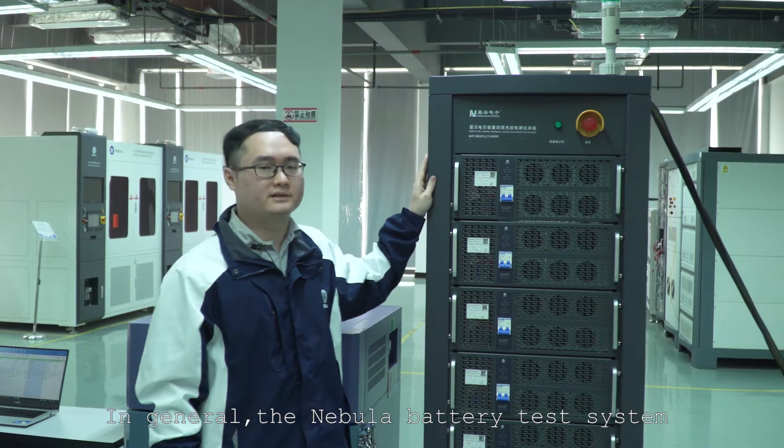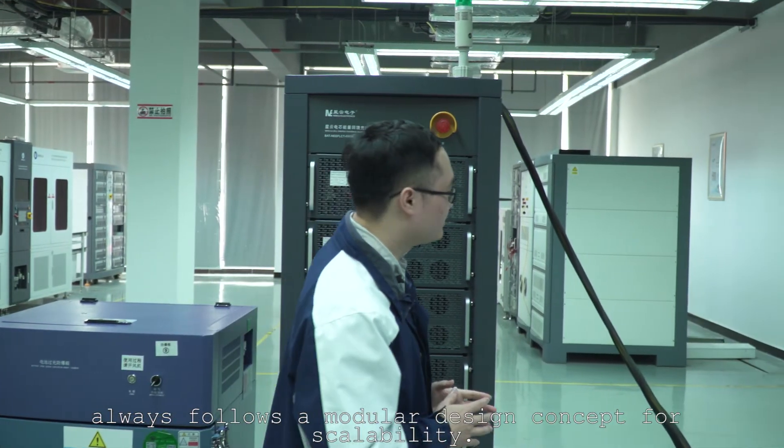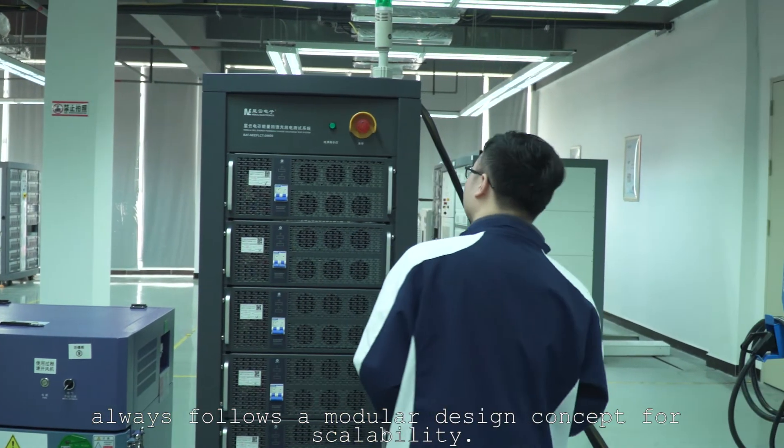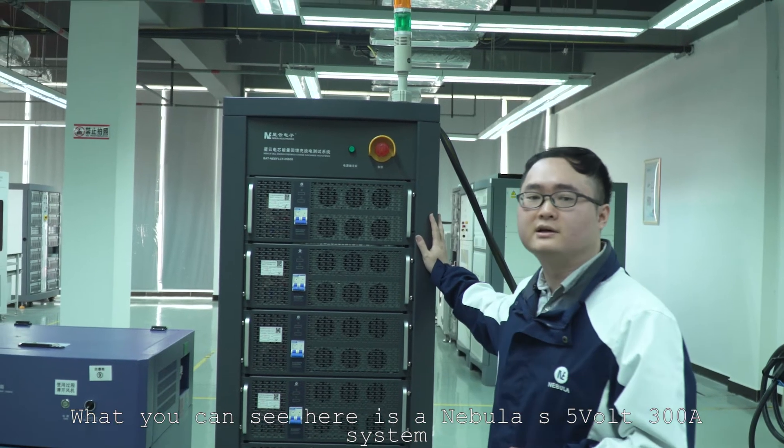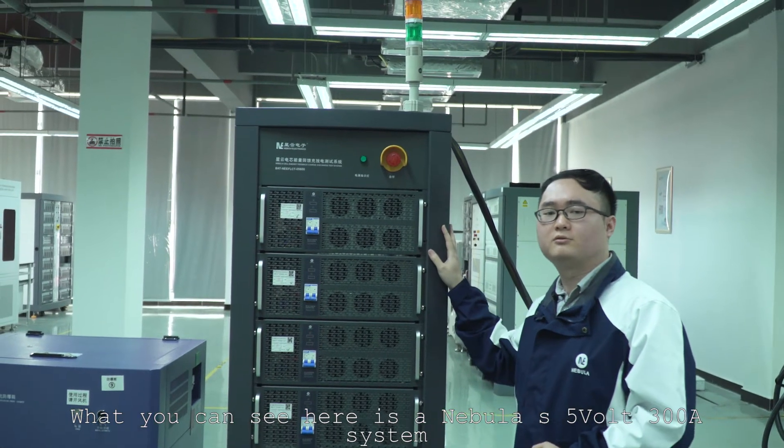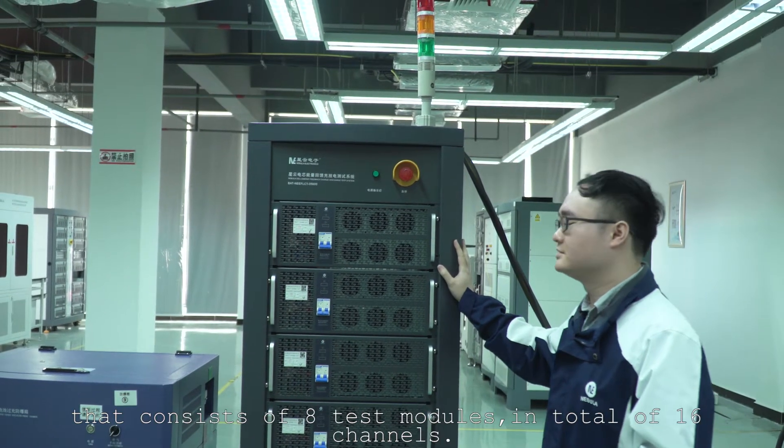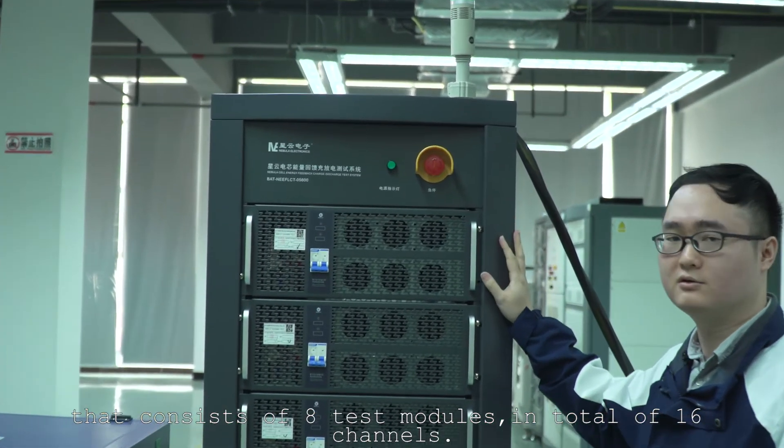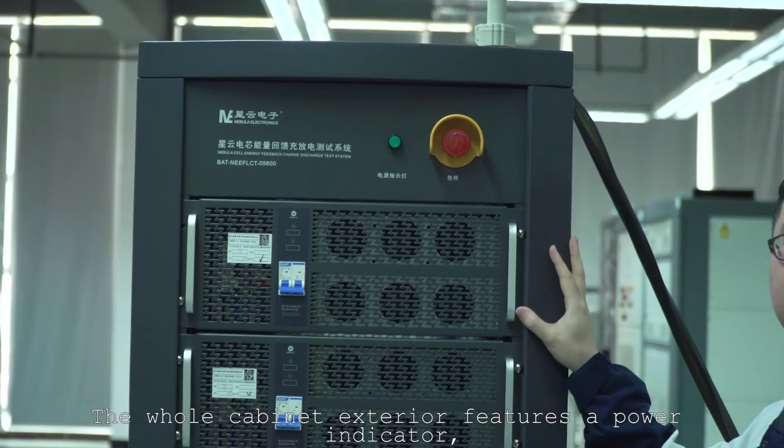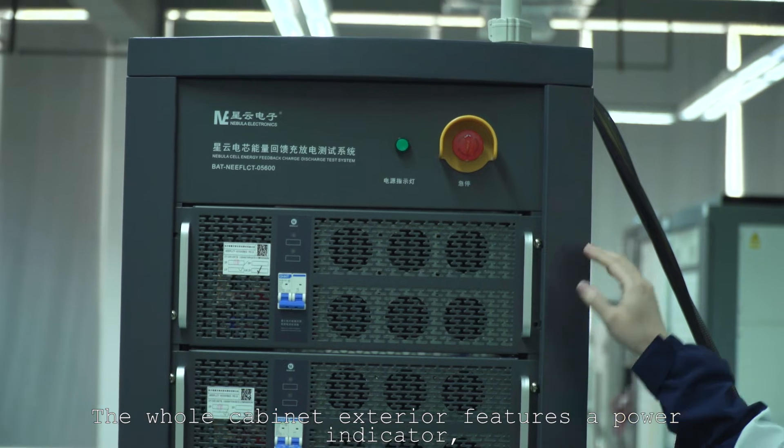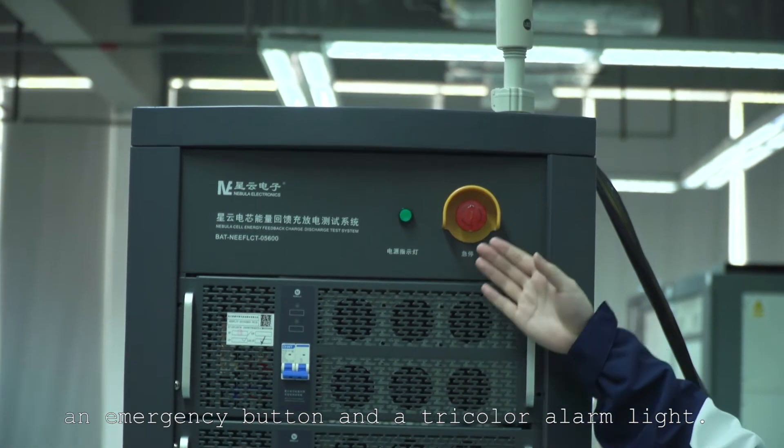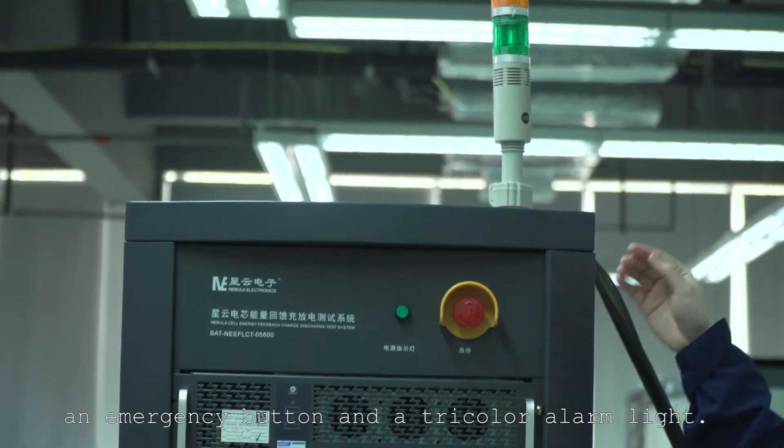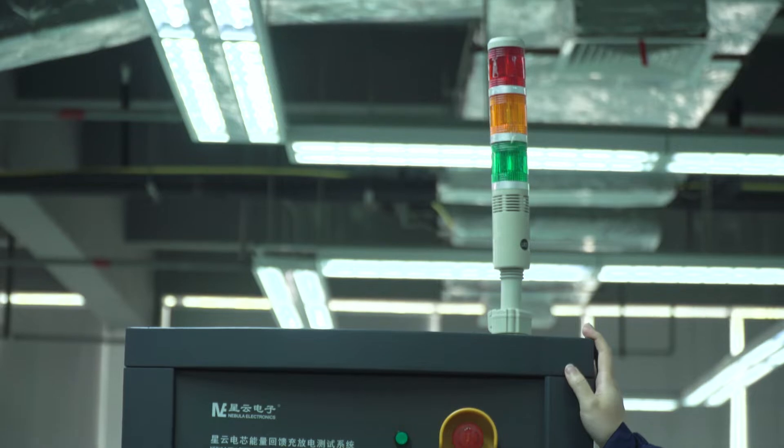In general, the Nebula battery test system always follows a modular design concept for scalability. What you can see here is a Nebula 5V 3A test system that consists of 8 test modules in total of 16 channels. The whole cabinet exterior features a power indicator, an emergency button, and a tricolor alarm light.